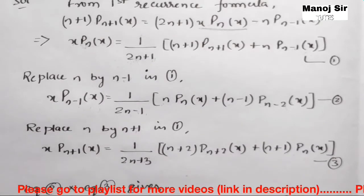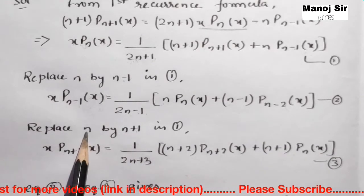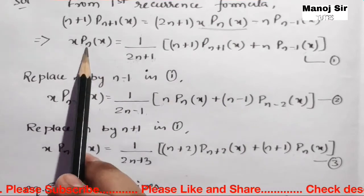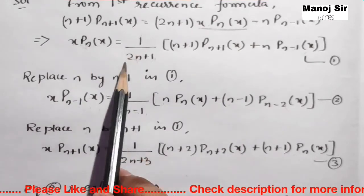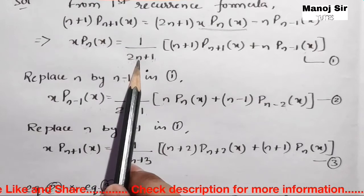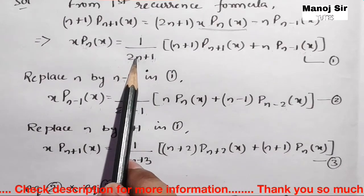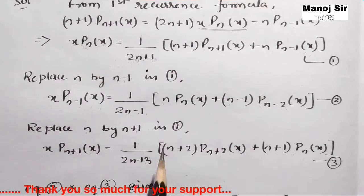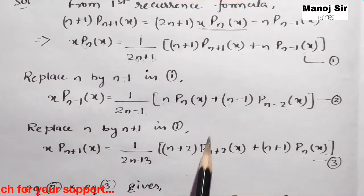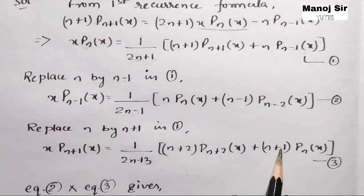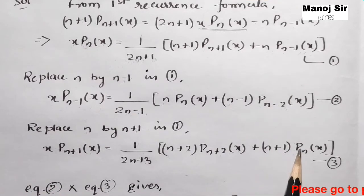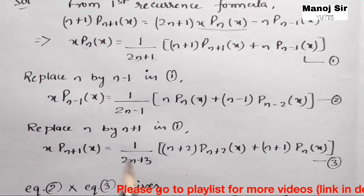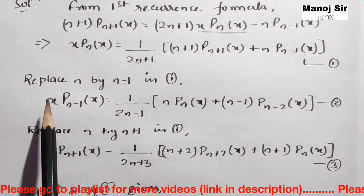Now we replace n by n+1 in equation 2. So we get: x·P_{n+1}(x) = [1/(2n+3)] times [(n+2)·P_{n+2}(x) + (n+1)·P_n(x)]. Let this be equation 3.